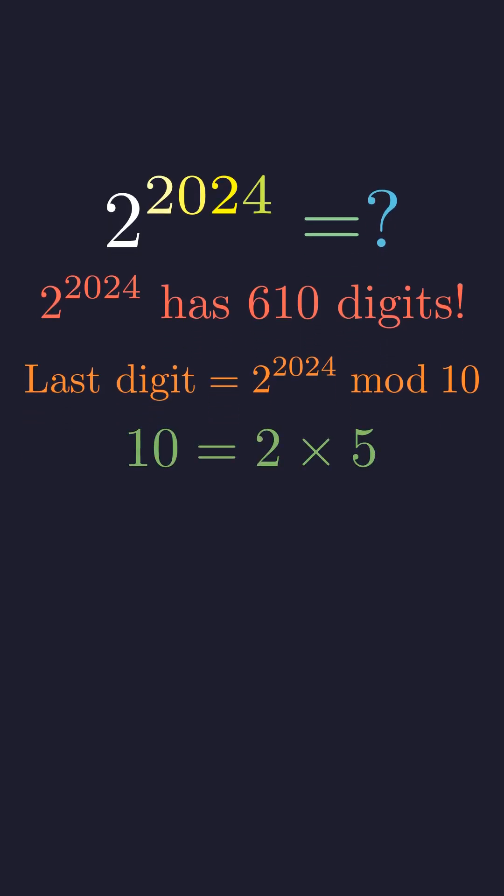Since 10 factors as 2 times 5, and these are coprime, we can split this problem. We'll find the answer modulo 2 and modulo 5 separately, then combine them.